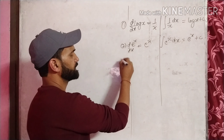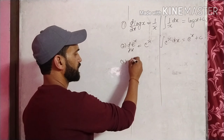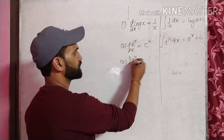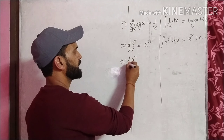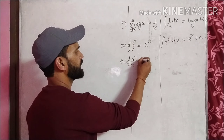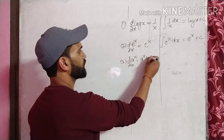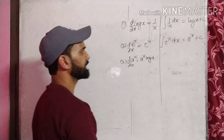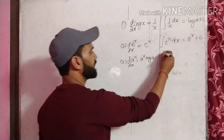Similarly, a raise to the power x का जो derivative होता है, वो होता है a^x · log a। लेकिन अगर मैं a^x का integration करूँ, तो a^x आएगा और log a नीचे आ जाता है — यानी a^x / log a, plus c। यह इसकी integration होगी।